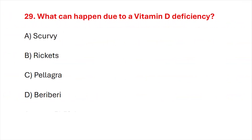Question number 29. What can happen due to vitamin D deficiency? Correct answer is option B: Rickets.